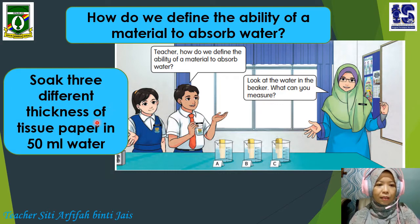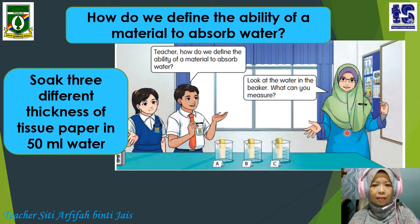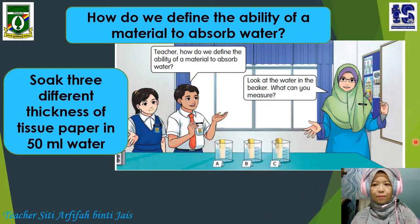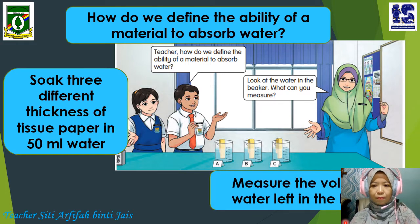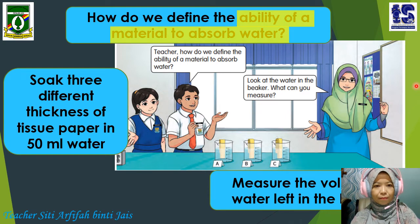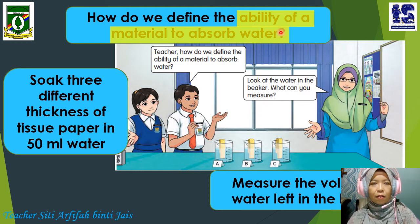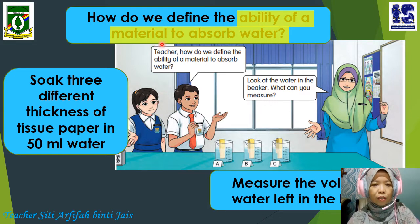This student soaked three different thicknesses of tissue paper in 50 ml of water. What does the teacher say? Look at the water in the beaker — what can you measure? We can measure the volume of water left in the beaker. The yellow colour represents the thing that we are going to investigate: the ability of a material to absorb water.